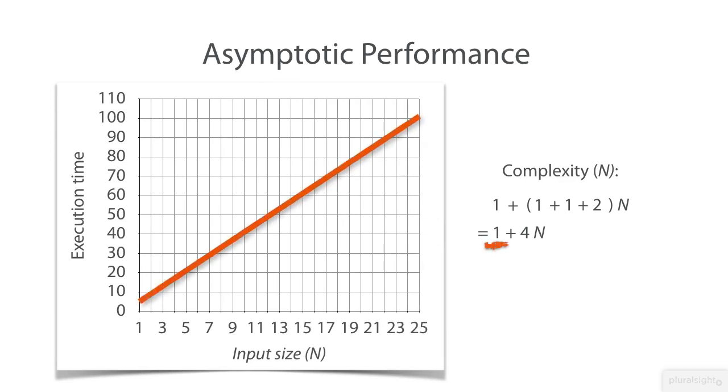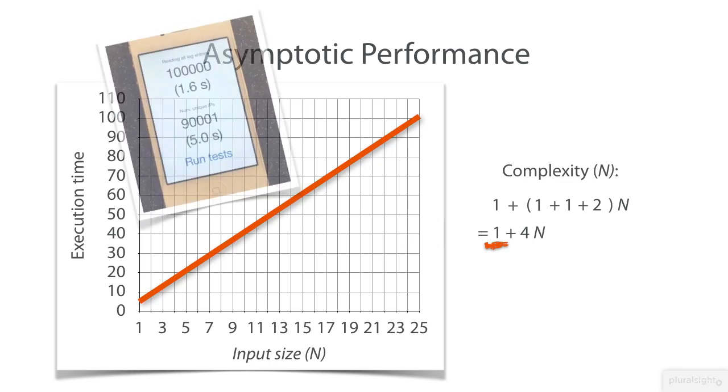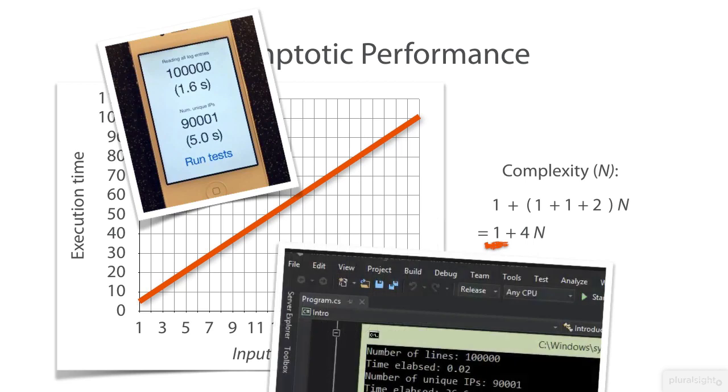Take a look at this underlined one. When n grows that becomes quite insignificant. Also assume that our program was run on an iPhone and that the curve represents the execution time there. If we took the exact same function and ran it on the much faster laptop, the curve may have looked like this.